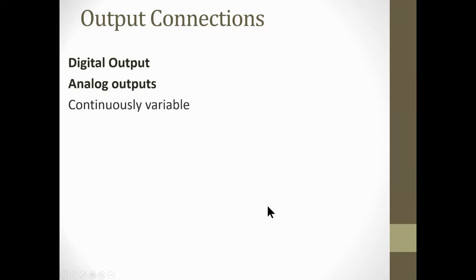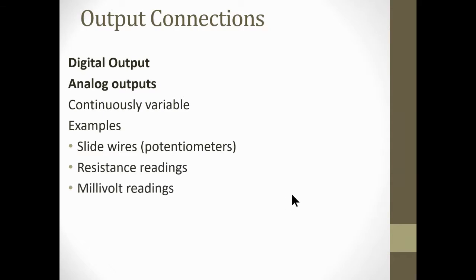Output: analog outputs, digital and analog outputs continuously variable. Examples of those are slide wires again, those are potentiometers, resistance readings, millivolt readings, and RTD resistive temperature detector readings. Those are outputs and thermocouples again.